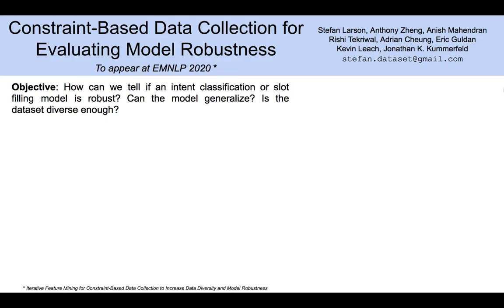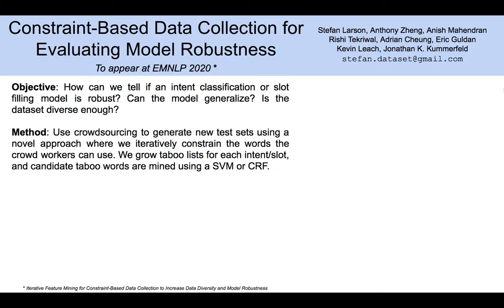First, how can we tell if an intent classification or slot filling model is robust? Can the model generalize? And is the dataset diverse enough to provide for generalizability? The way we try to answer that is by crowdsourcing new test sets of existing datasets using a new approach where we iteratively constrain the words that crowd workers can use. We grow what are called taboo lists for each intent or slot, and candidate taboo words are mined using an SVM or a CRF.